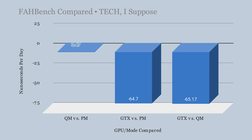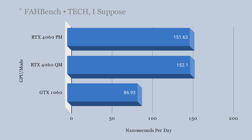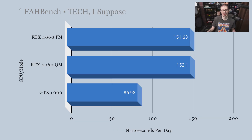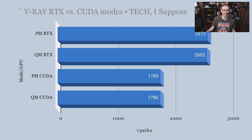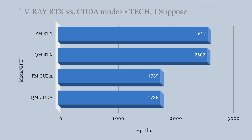In the Folding@Home benchmark there is a noticeable difference — measured in nanoseconds per day, you get 86 with the GTX 1060 and approximately 150 with the 4060, so you will benefit if you use that program. In the Chaos Group V-Ray benchmark there is also a noticeable score difference between the two GPUs; however, the two different modes on the 4060 don't make much of a difference there either.